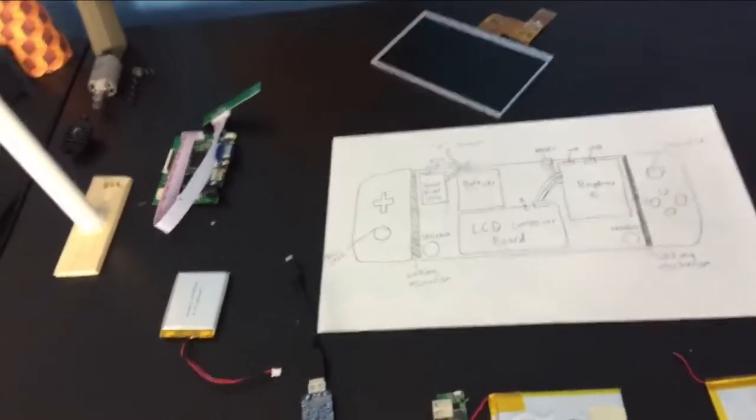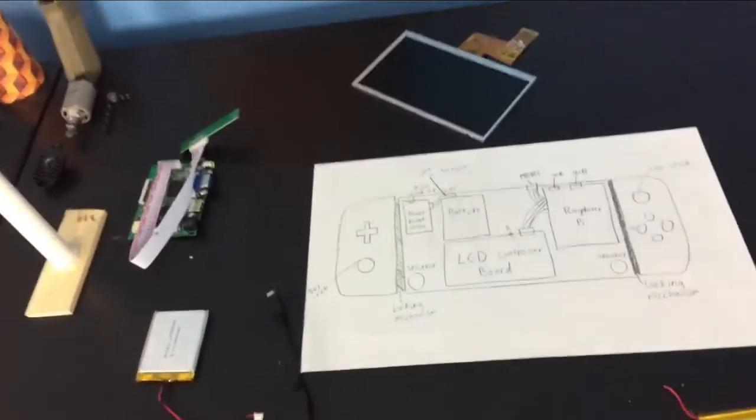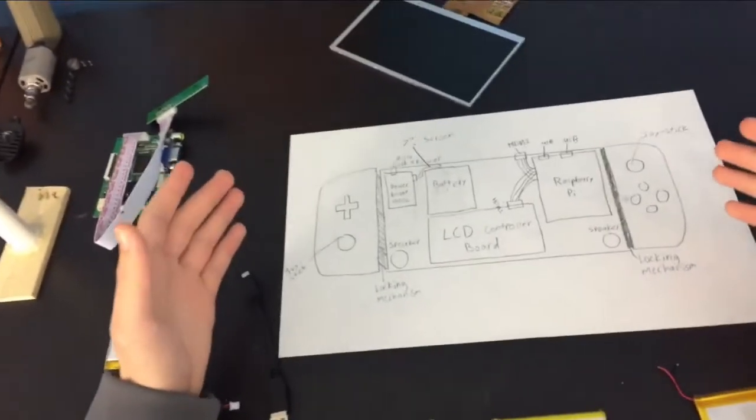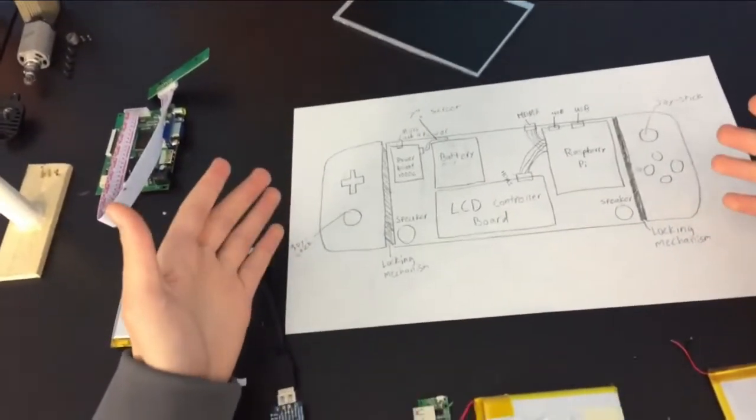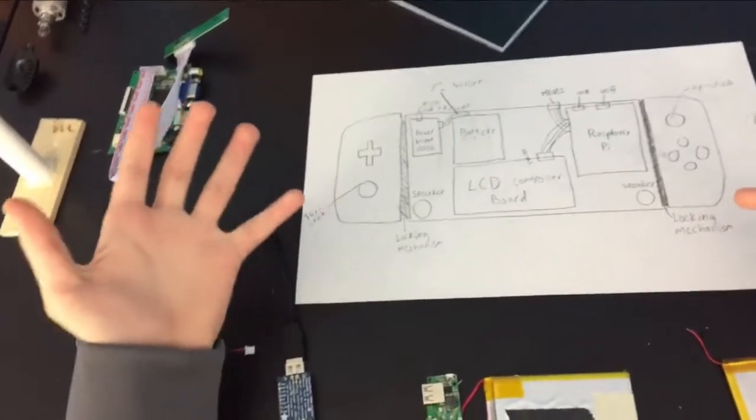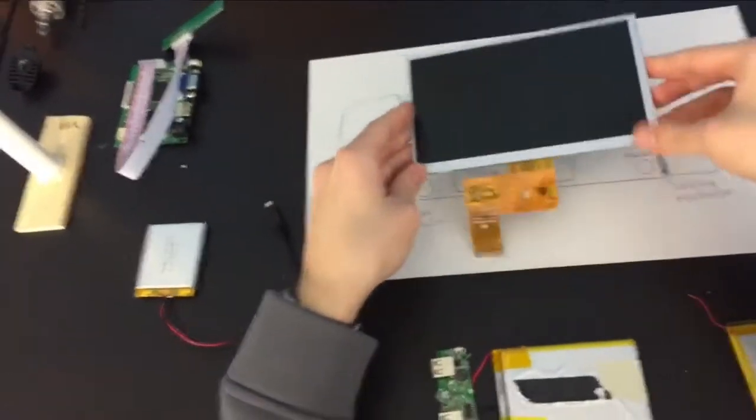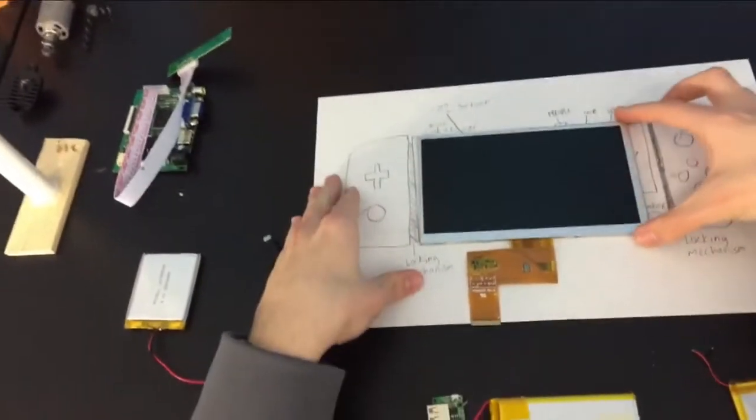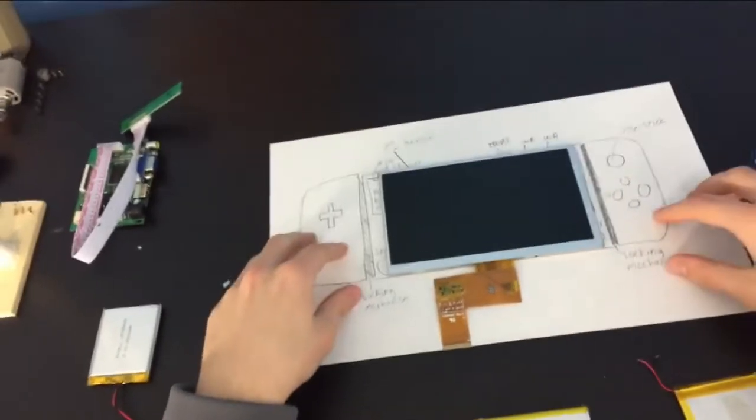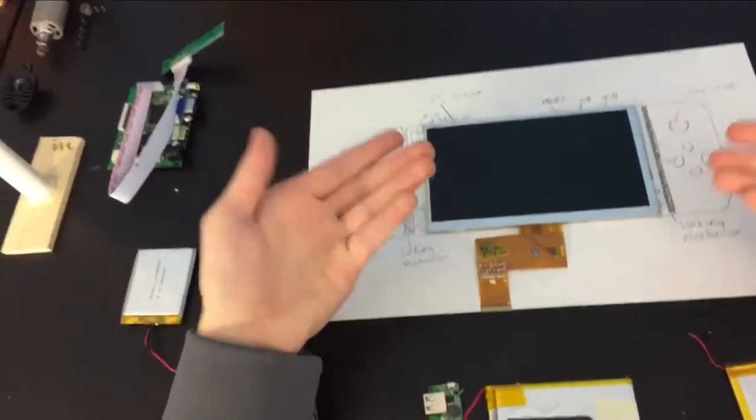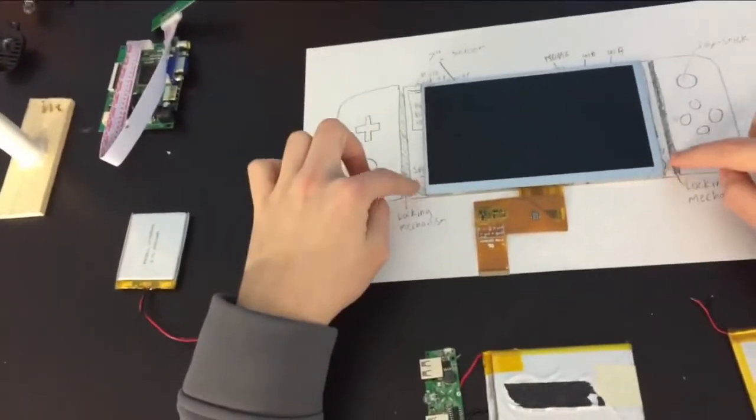Alright guys, so here you can see I have the little sketch of what I think the Raspberry Pi console is going to be, what it's going to look like. So I've got this seven inch screen here and it fits. I didn't measure any of this but it fits pretty good. So I'm thinking of either doing the speakers on the bottom of the console or on the sides.